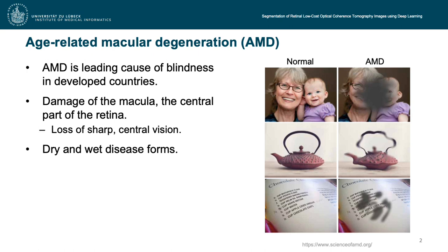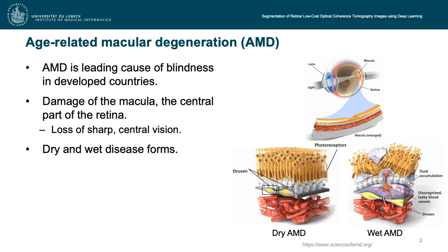AMD has two forms: the dry and the wet AMD. The dry AMD affects about 70–80% of all AMD patients and has a rather slow disease progression, where small deposits accumulate within the retina, which are called drusen. In contrast, the wet AMD affects only 10–15% of AMD patients but accounts for 90% of all cases with severe vision loss from the disease.